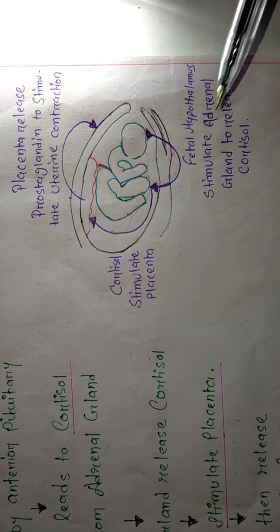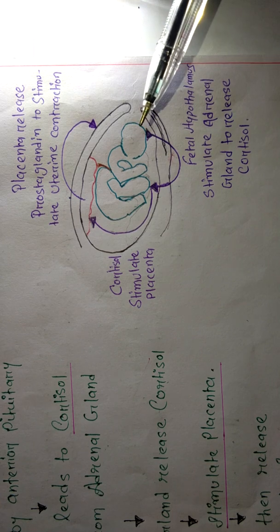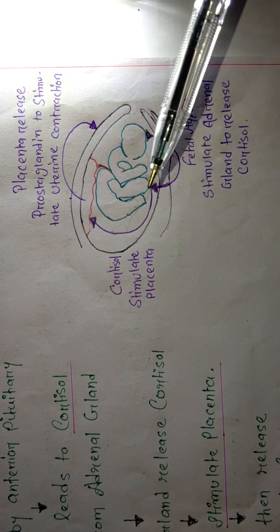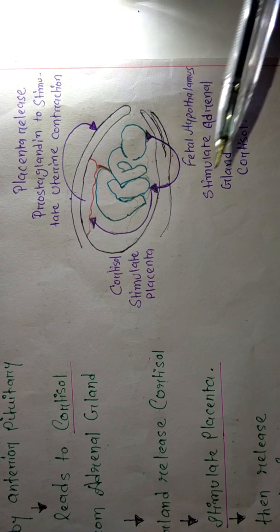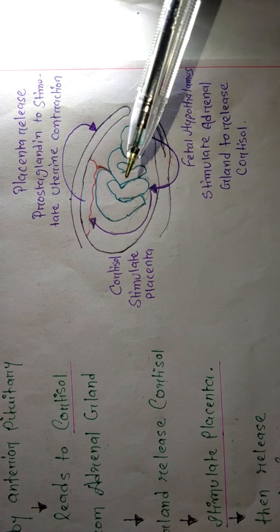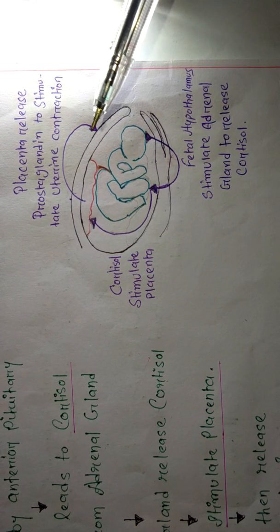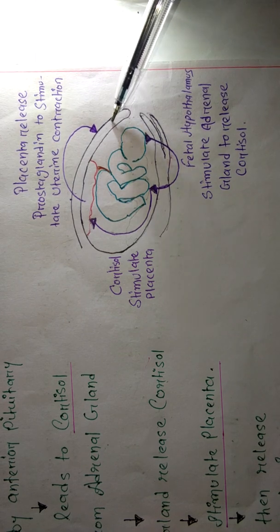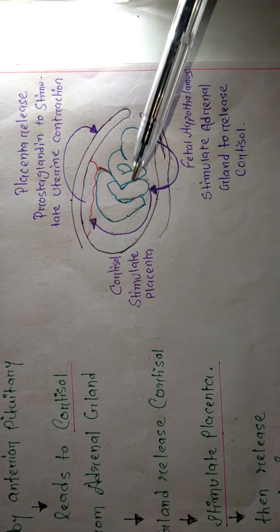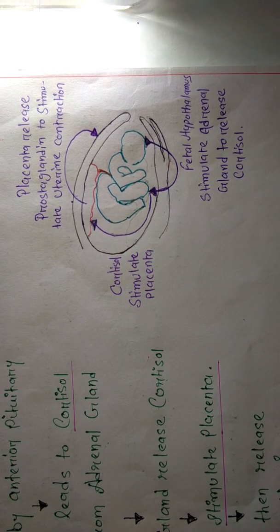To summarize the pathway: fetal hypothalamus → anterior pituitary releases ACTH → ACTH goes to adrenal gland → adrenal gland releases cortisol → cortisol stimulates the placenta → placenta releases prostaglandin → prostaglandin stimulates uterine contractions. When uterine contractions start, we can say labor has also started. The rest of the topic will be explained in the next part of the video.